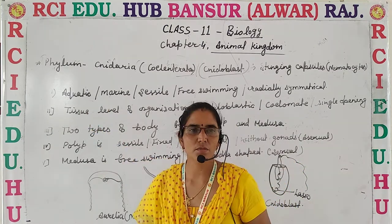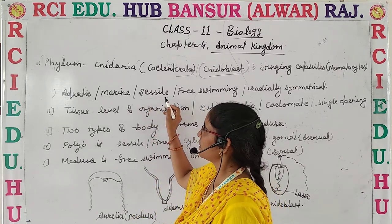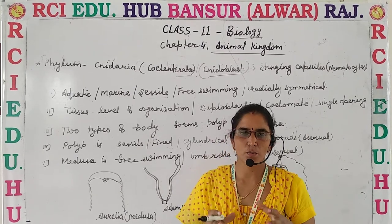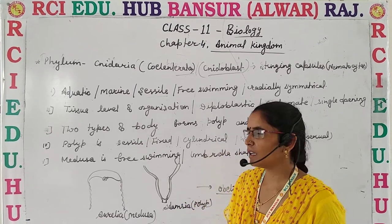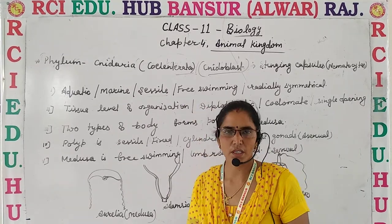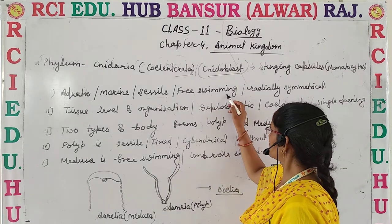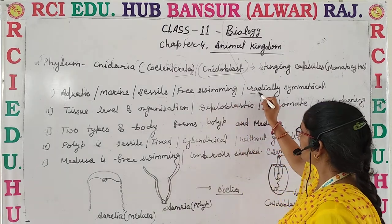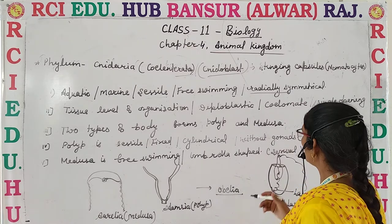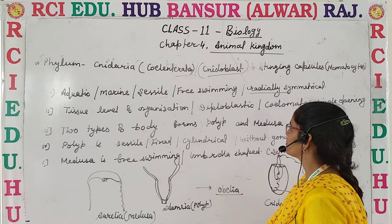We are discussing aquatic organisms, found in both marine water and freshwater. These organisms are radially symmetrical, meaning the body can be divided into two equal halves by more than one plane.